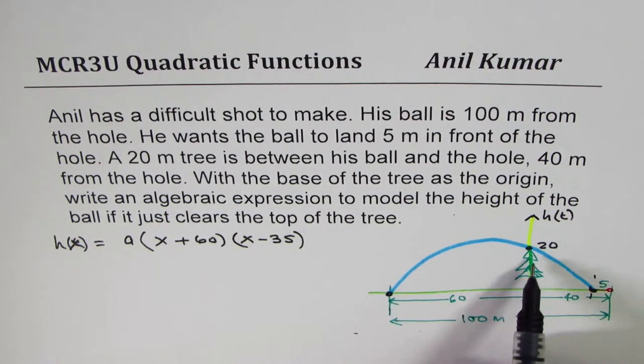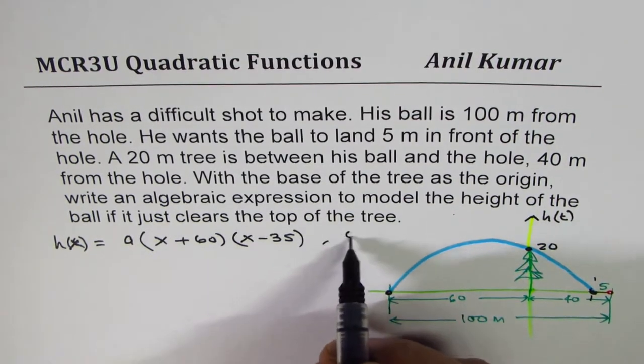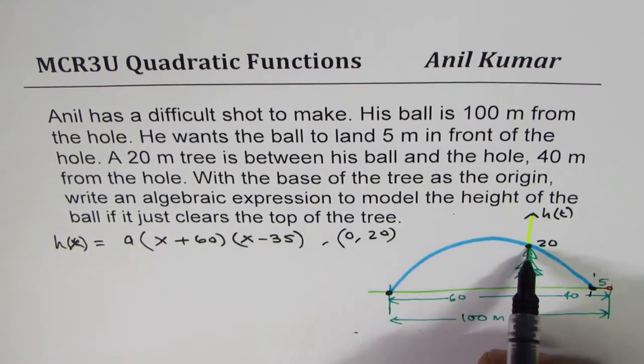To find a, we can use 0 and 20. That's the point.